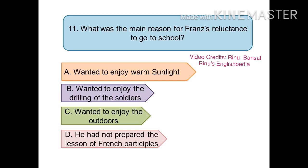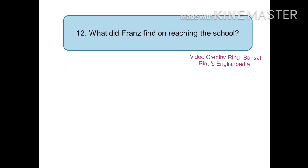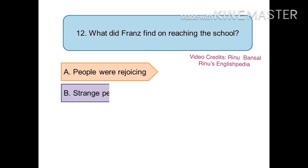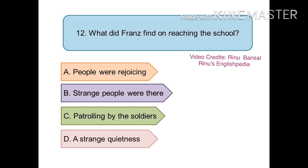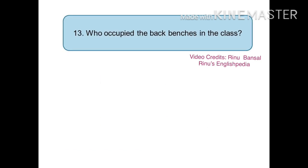The right answer is (d) he had not prepared the lesson of French participles, although all the options are correct but the most appropriate one is option (d). The next question is: what did Franz find on reaching the school? The options are (a) people were rejoicing, (b) strange people were there, (c) there was patrolling by the soldiers, or (d) there was a strange quietness. The right answer is (d) there was a strange quietness.